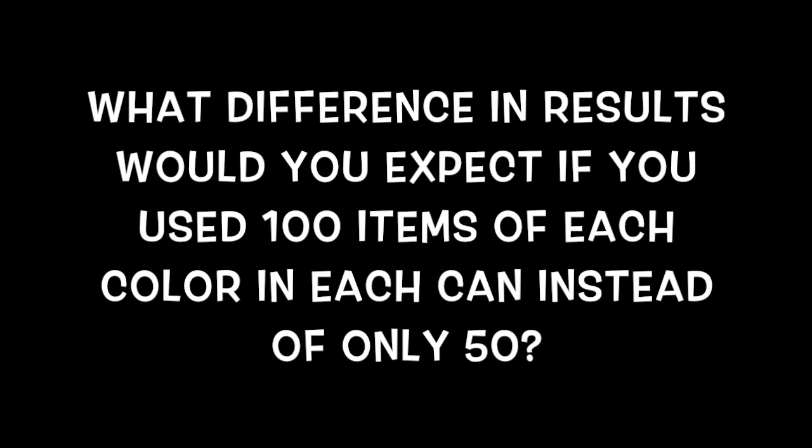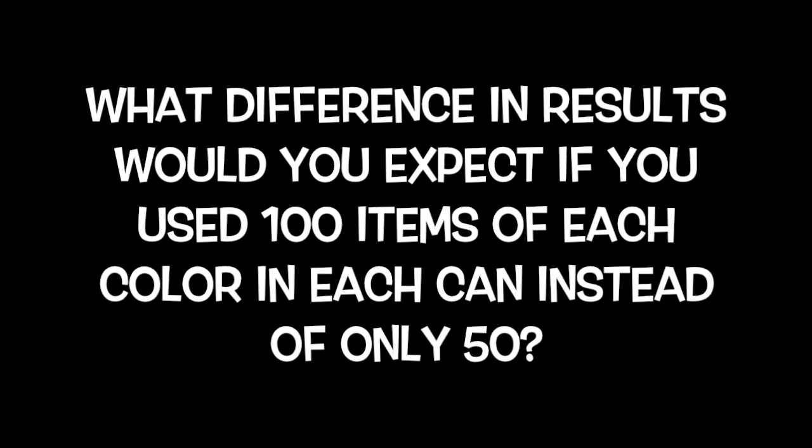It's equal as if we had 50 items. The probability using 100 items of each color is 50-100-50, and the probability using 50 items of each color is 25-50-25. Both results simplified to the minimum are 1-2-1, but with our investigation we reached the conclusion that it's going to be easier to get the predicted results if you have more objects.